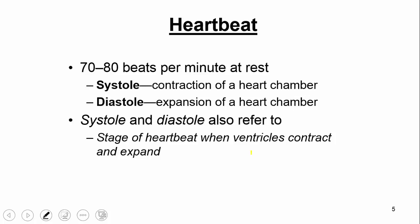There are two parameters that make up blood pressure — for example, 100 over 60. There's the systolic pressure, which is the contraction of a heart chamber, and there's the diastolic pressure, which is the expansion of a heart chamber. These are things we'll talk about more later in the course.